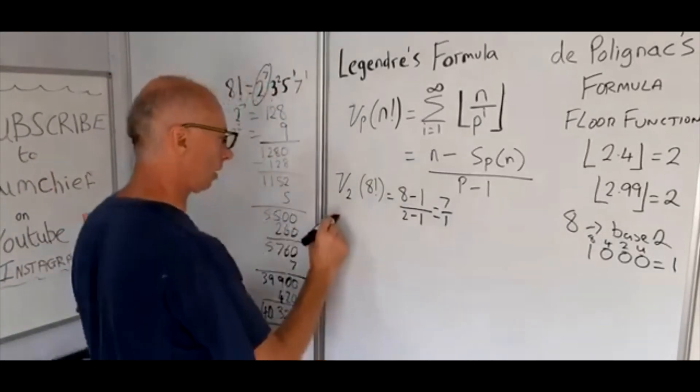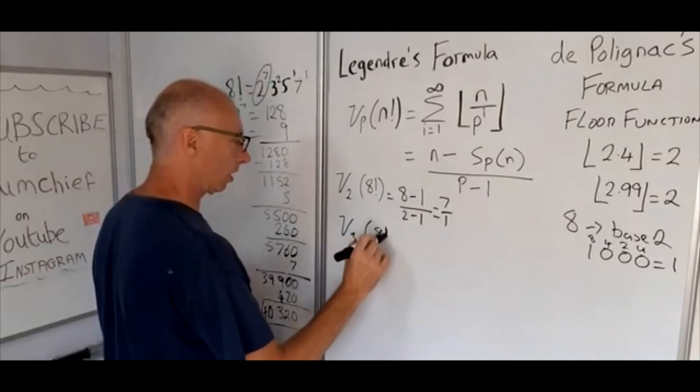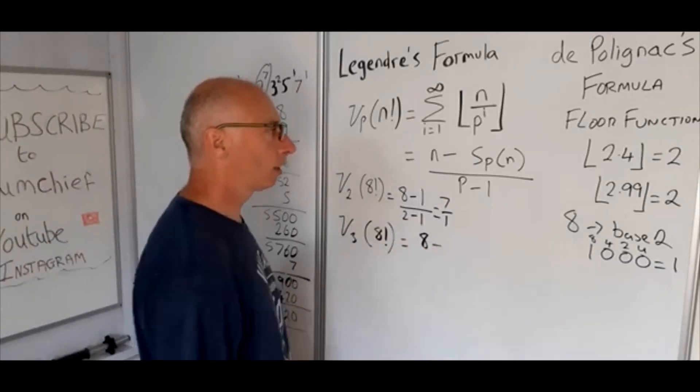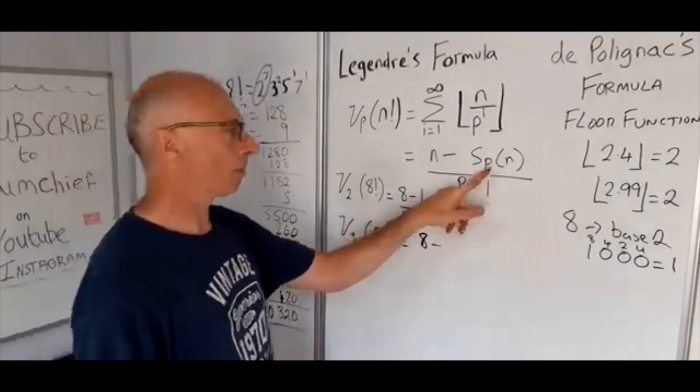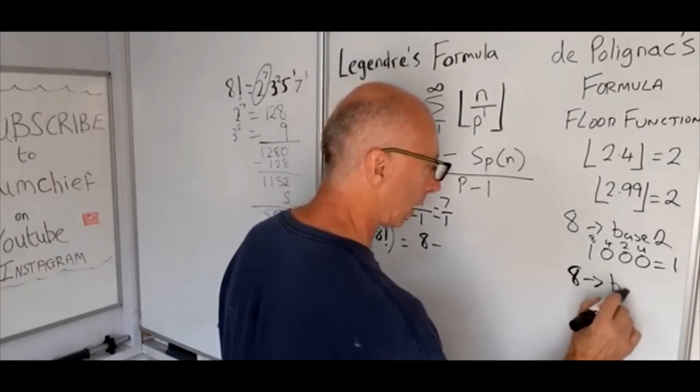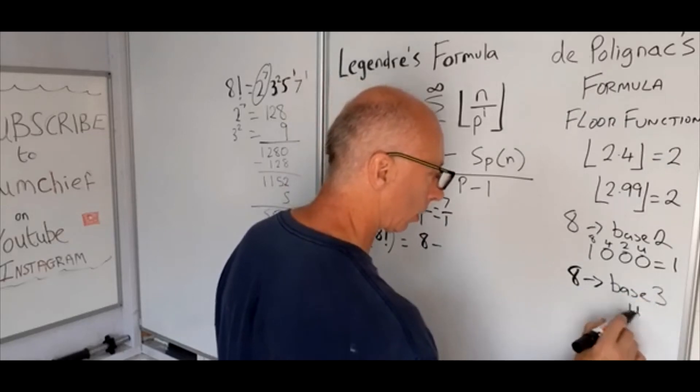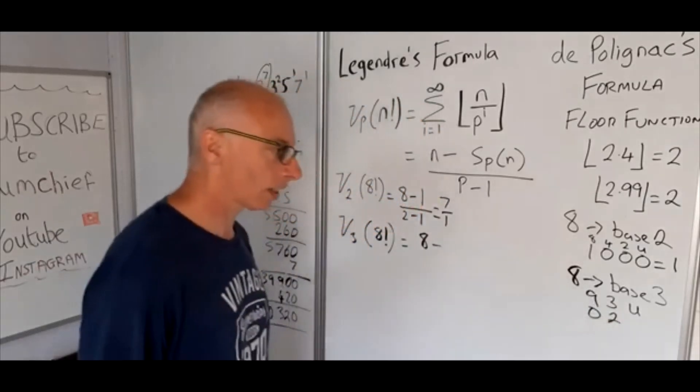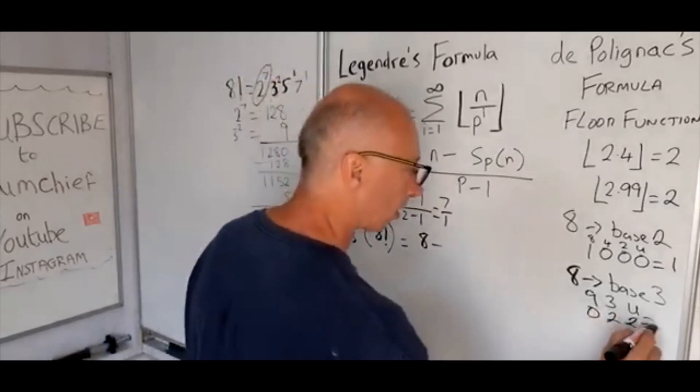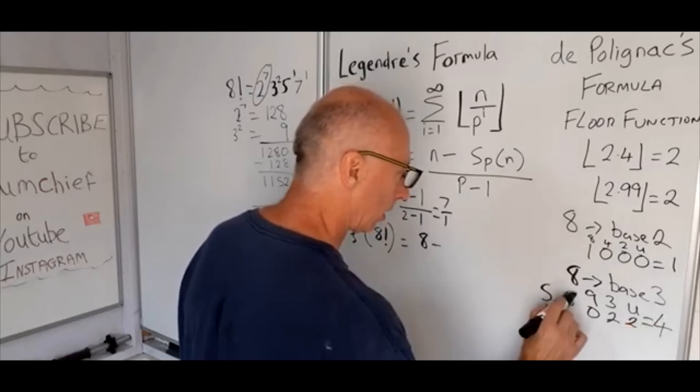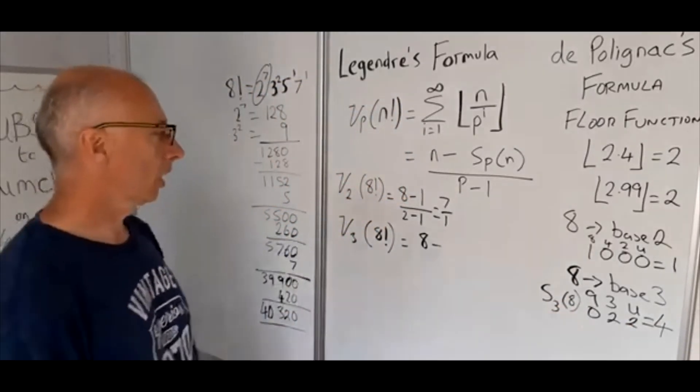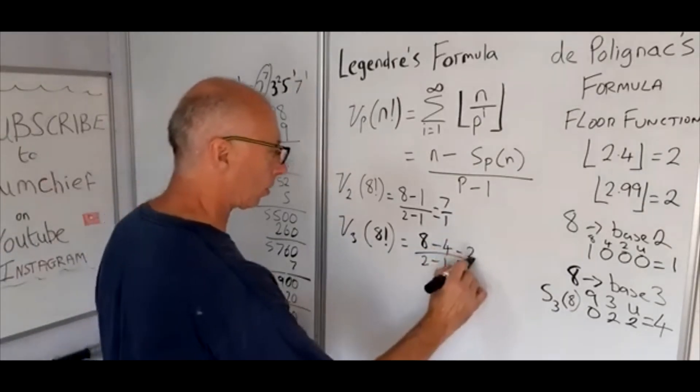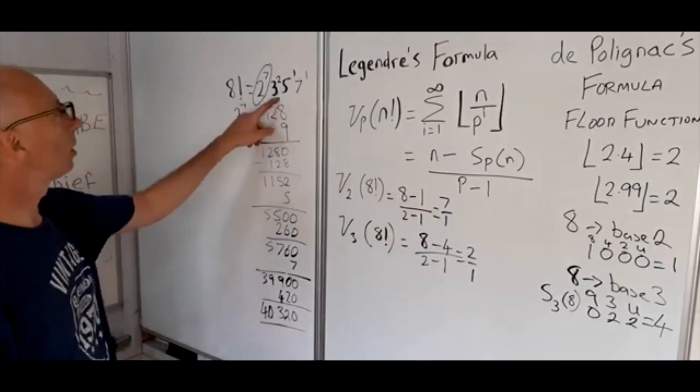So let's try with 3. So nu_3 of 8 factorial, so the p-adic value of 8 factorial. So we've got our 8 here, but now we need to work out s subscript 3 of n. So 8 in base 3, so we've got units, 3's and 9's. So 0, 2 threes plus 6 with 2 left over. So then the s_3 of 8 is 4. So 8 minus 4 divided by 3 minus 1, that gives us 2 over 1, which is going to be 2. So check, 3 works.